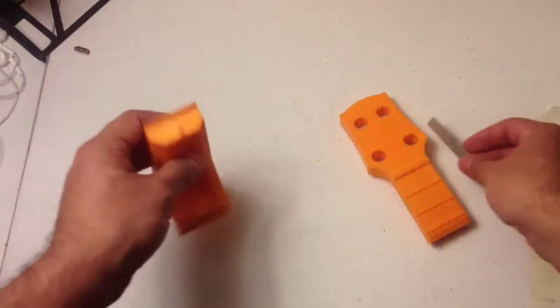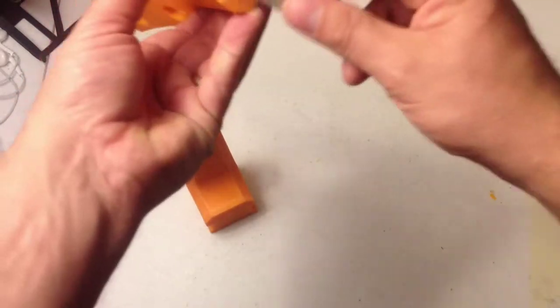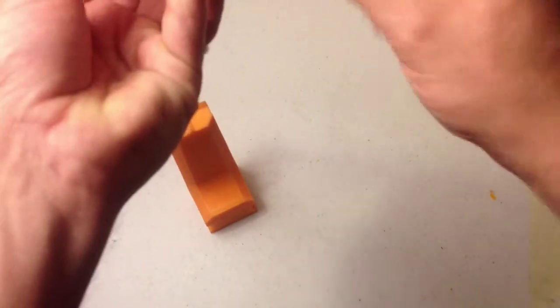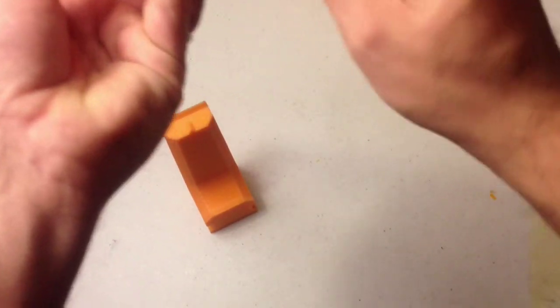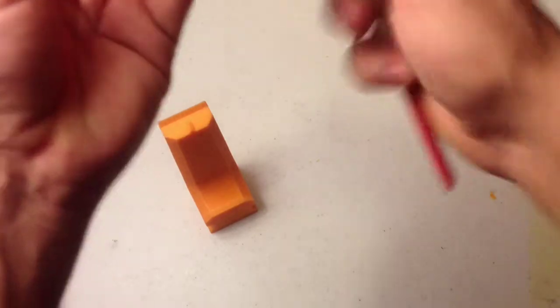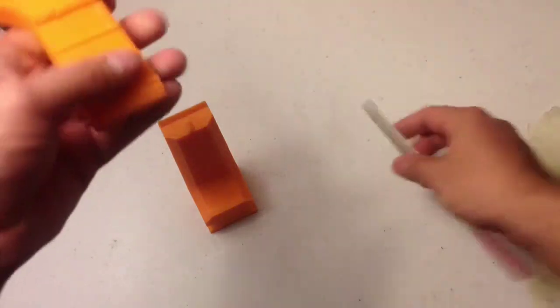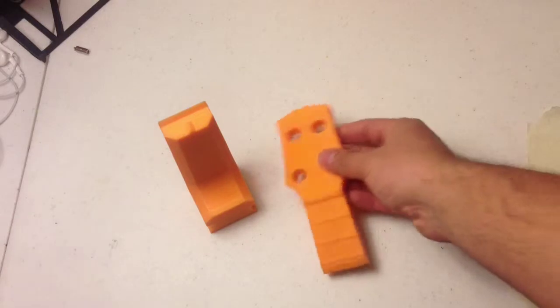And then before I glue it up, just like with the body, I just rough up both edges with some coarse sandpaper or the file. And once it's all roughed up, you just apply the superglue.